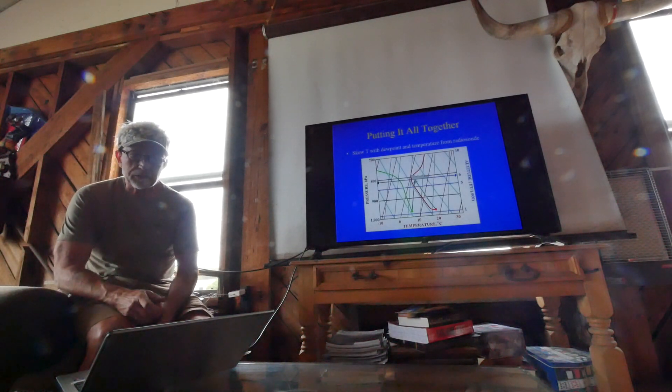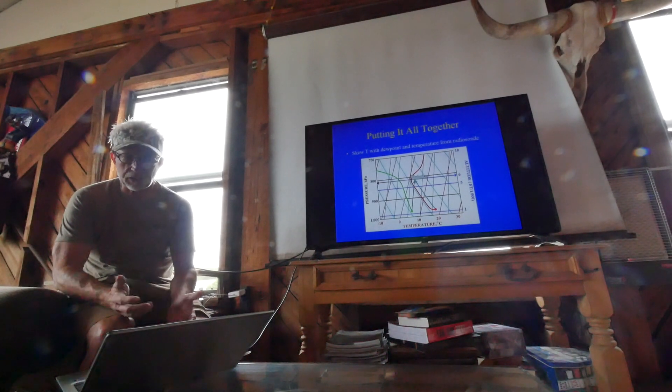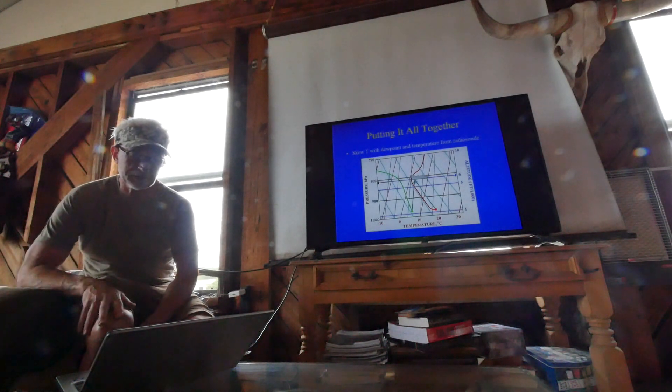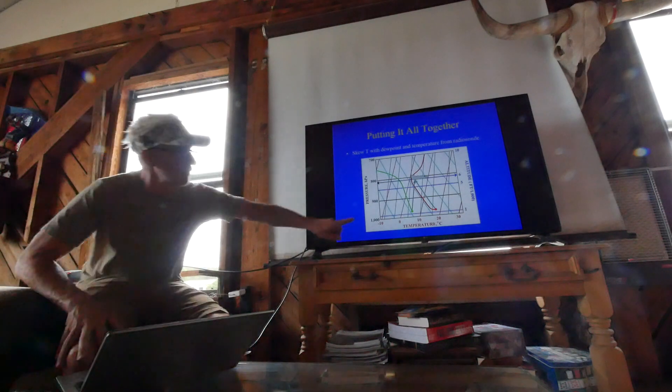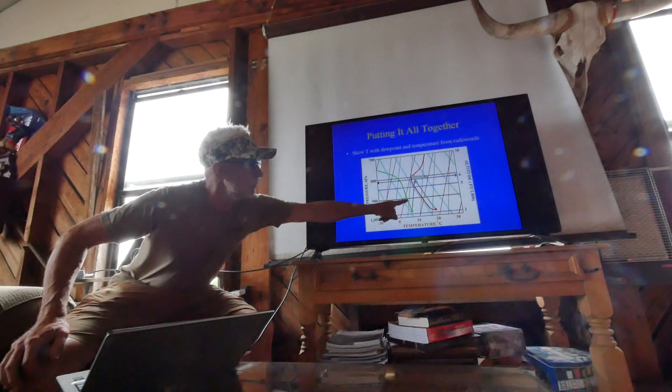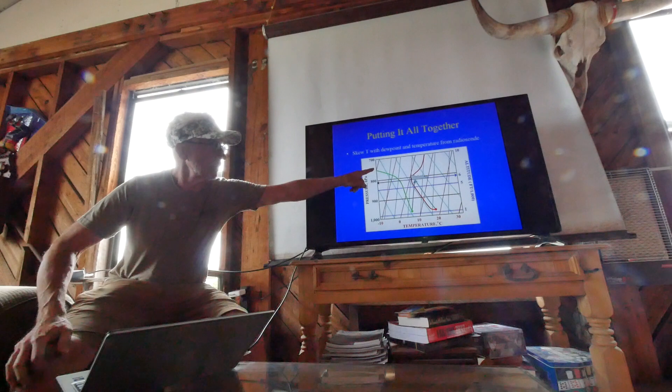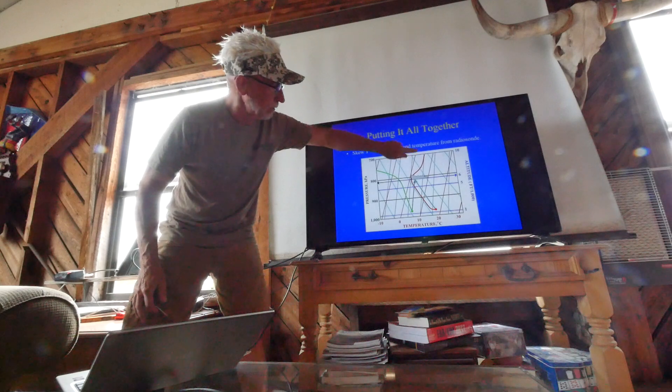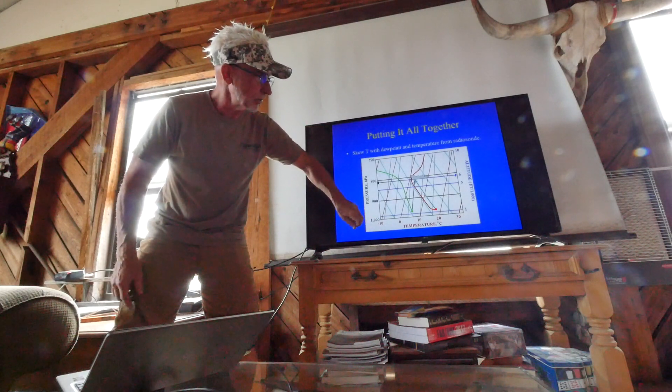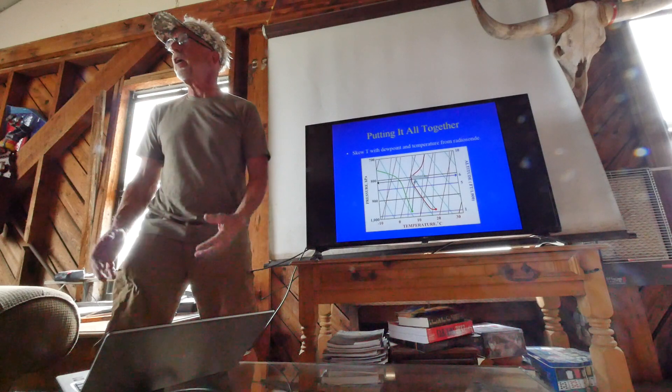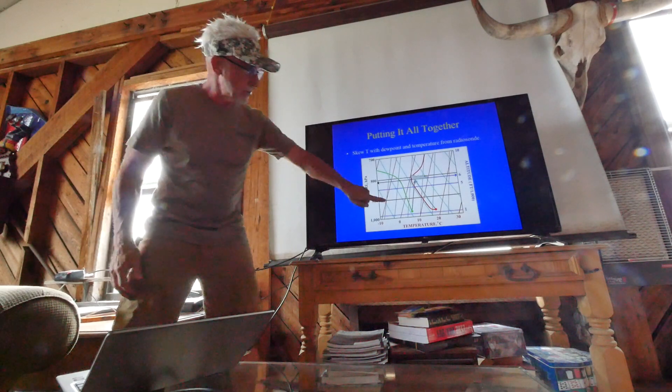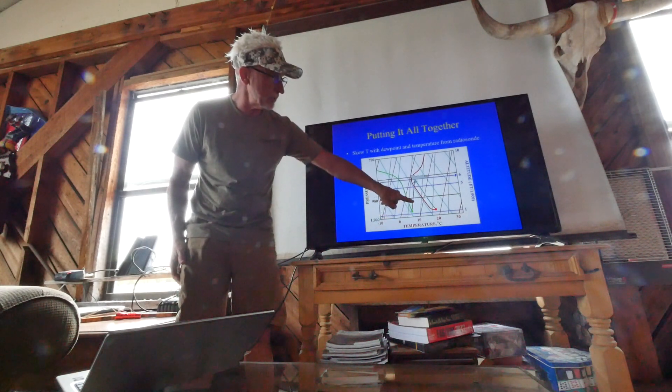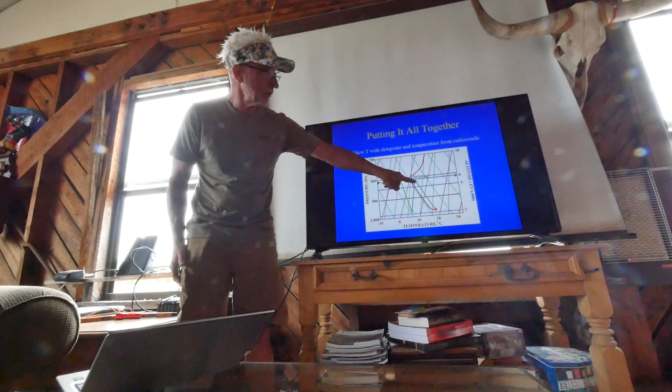Putting it all together, a Skew-T with a dew point and temperature from a radiosonde. I got all this information online, thankfully I didn't have to create these graphs. In this case, you look at the dew point temperature profile. The dew point line runs from lower left to upper right, almost a straight line. To predict what's going to happen to a parcel of hot air that is rising, you take that temperature at the surface for the dew point and follow it up that dew point line.